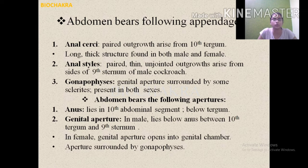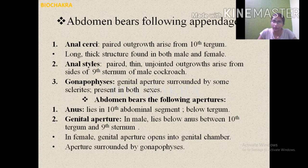With this we have completed today's topic — the external morphology of the cockroach — covering shape, size, color, body divisions including head, thorax, abdomen, and exoskeleton. What remains is the anatomy of the cockroach, which we will start in the next lecture.